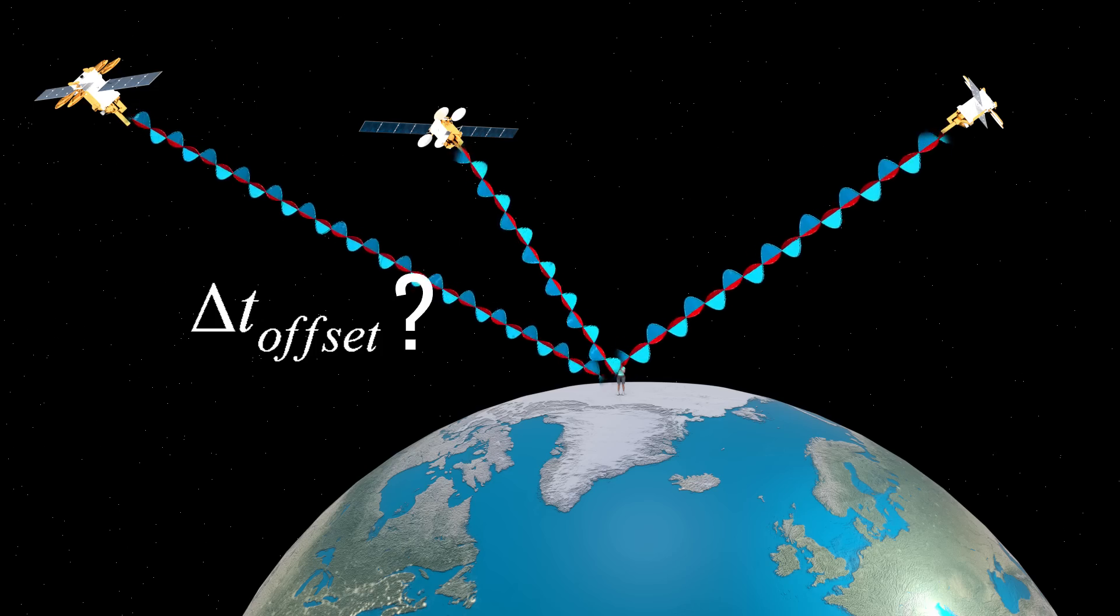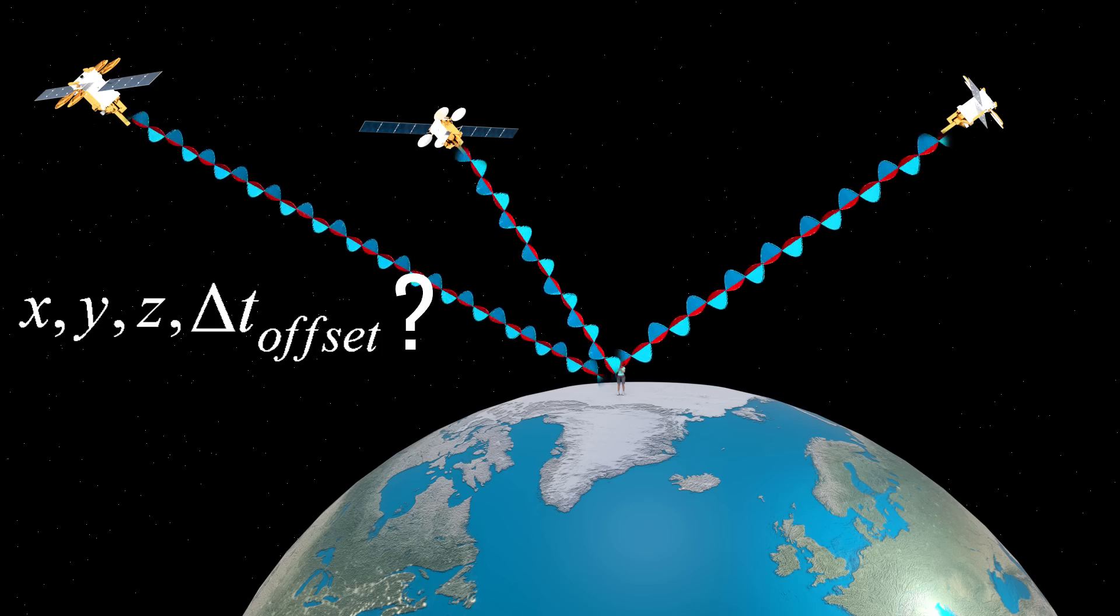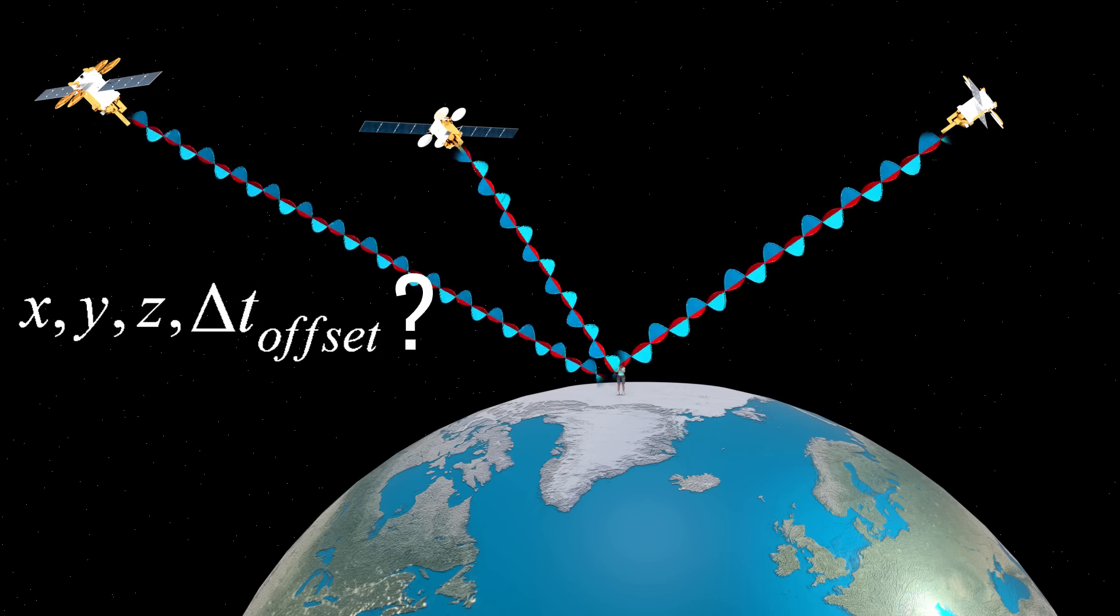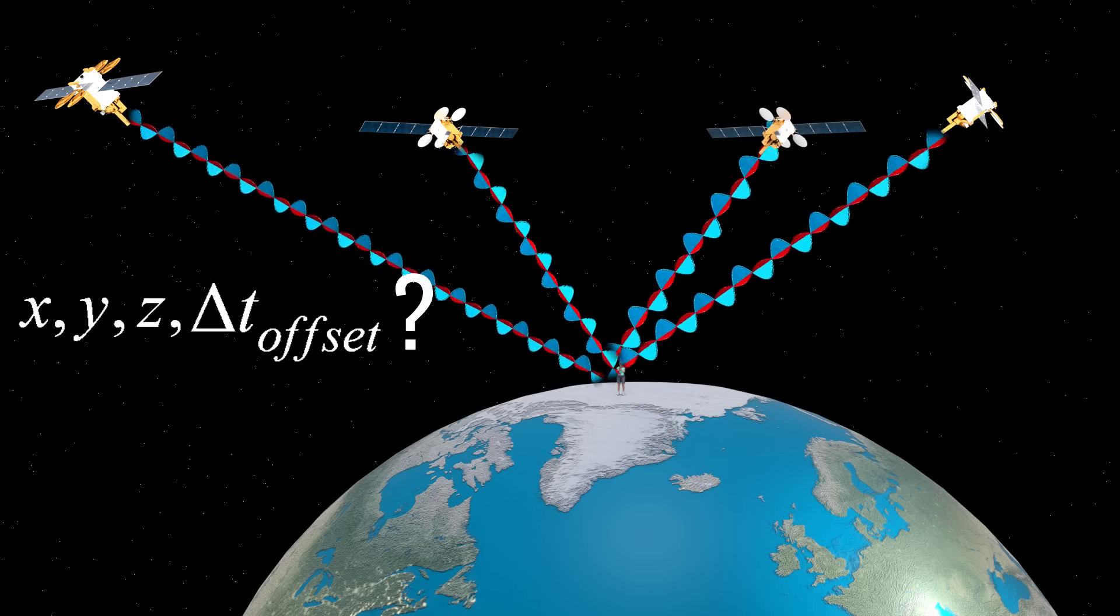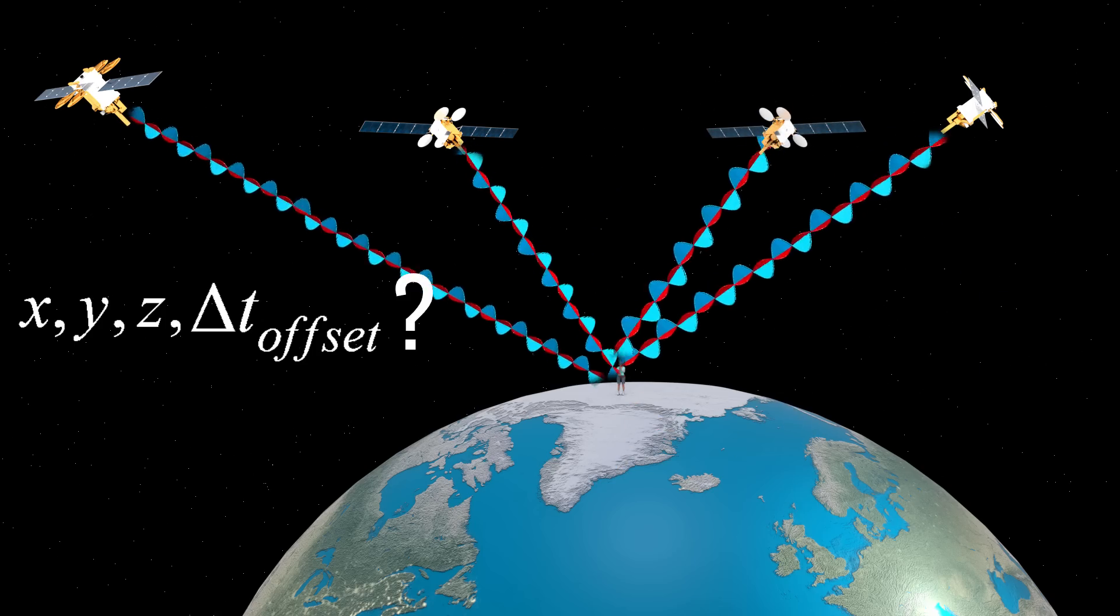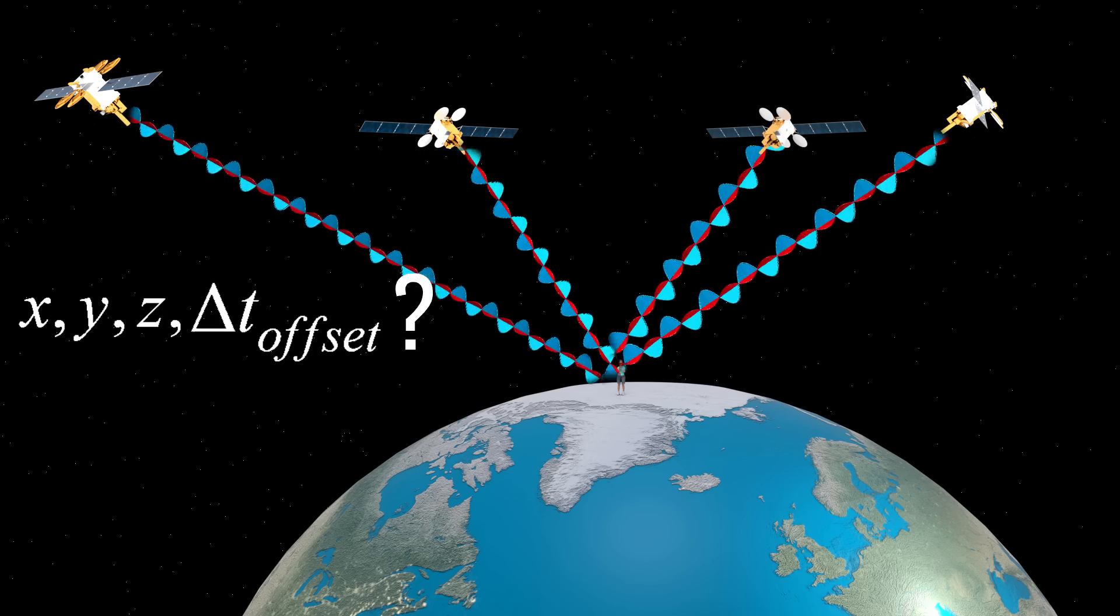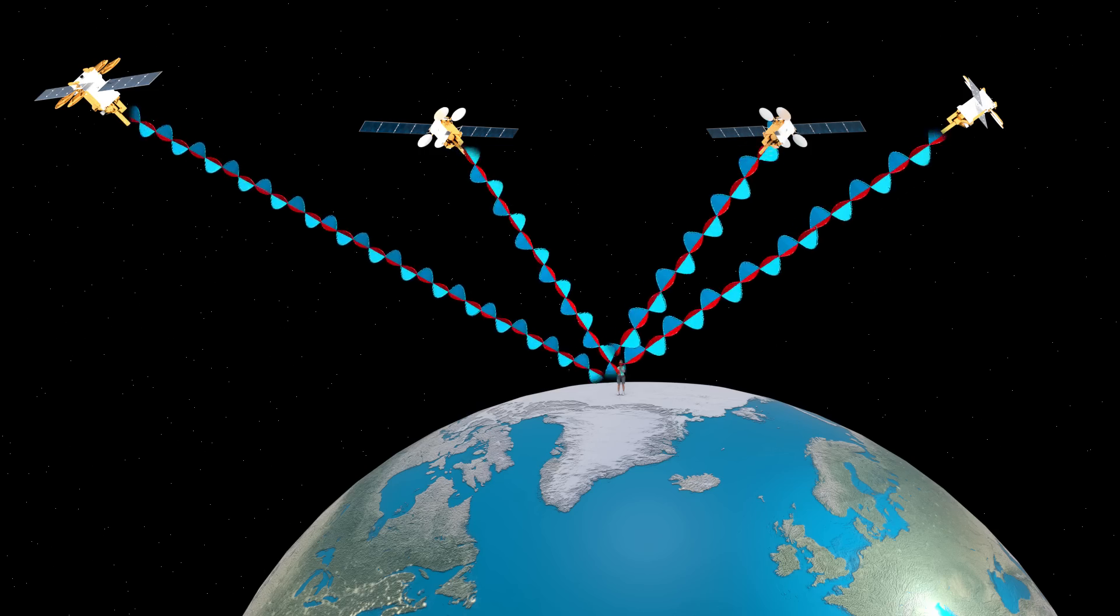This means, apart from the three spatial coordinates, we have to solve the time offset value of your receiver as well. We need an extra satellite measurement to solve this fourth unknown. And that is why we need four satellites to measure your location. This way, we avoid the need of an atomic clock in your mobile device.